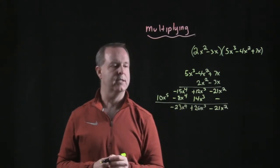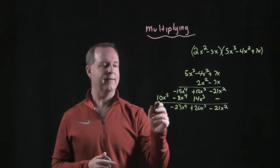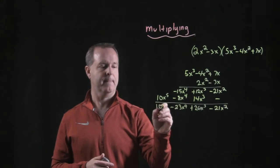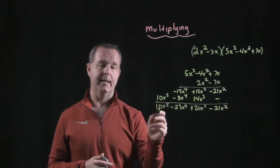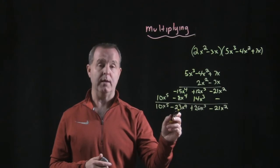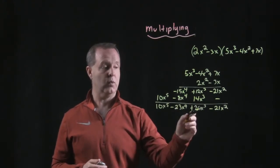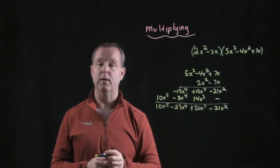15 and 8, sometimes I just can't add correctly. And then 10x to the fifth. And there's my solution. 10x to the fifth minus 23x to the fourth plus 26x to the third minus 21x squared.